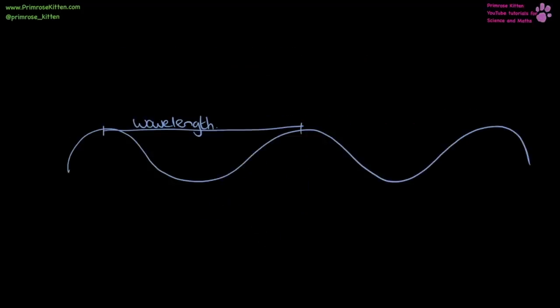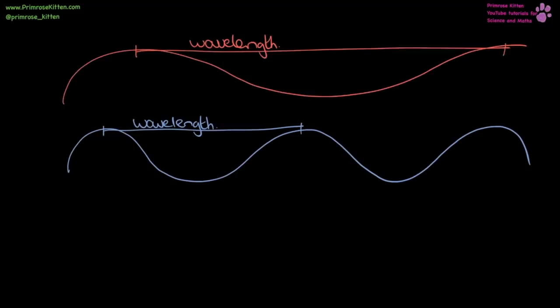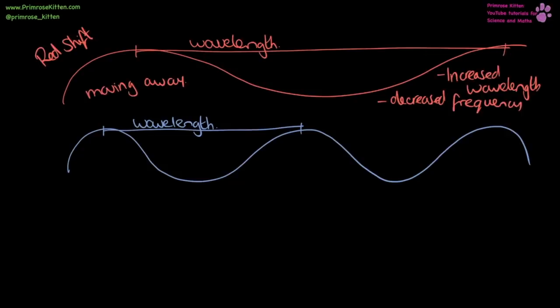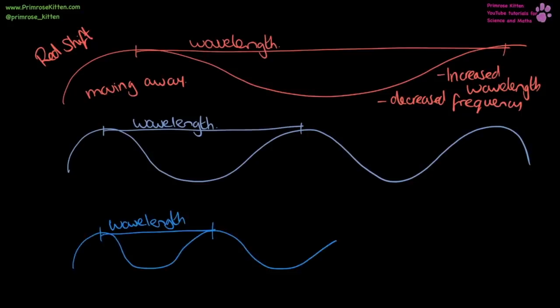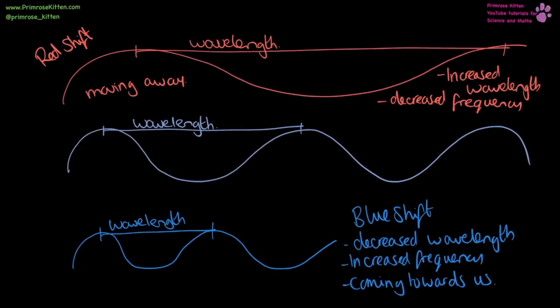When we look at stars, the wavelength of light can tell us things about them. If the wavelength has increased and frequency has decreased, the wave is being stretched out — it's moving away from us. When wavelength increases, the light looks red — we call this red shift. If light looks blue, the wave is being squashed with a decreased wavelength and increased frequency, meaning the star is coming towards us — this is blue shift. The majority of stars are moving away from us, and because they're moving away, we can infer that at one point they were all in the same place. This is how red shift gives evidence for the Big Bang.